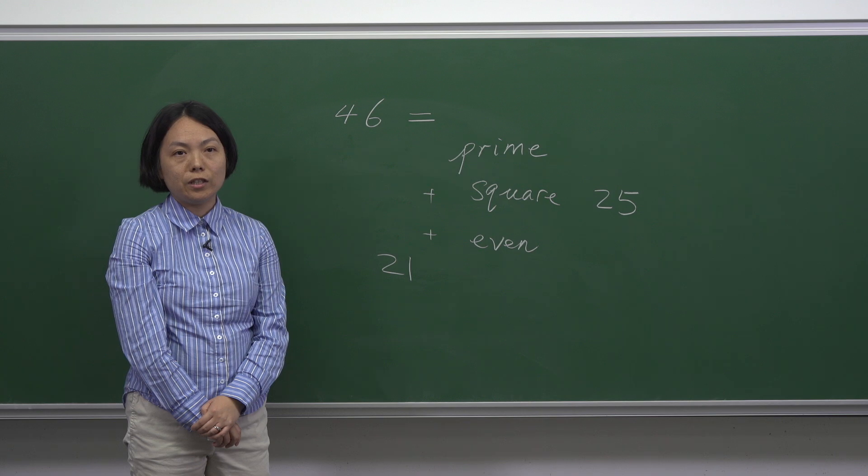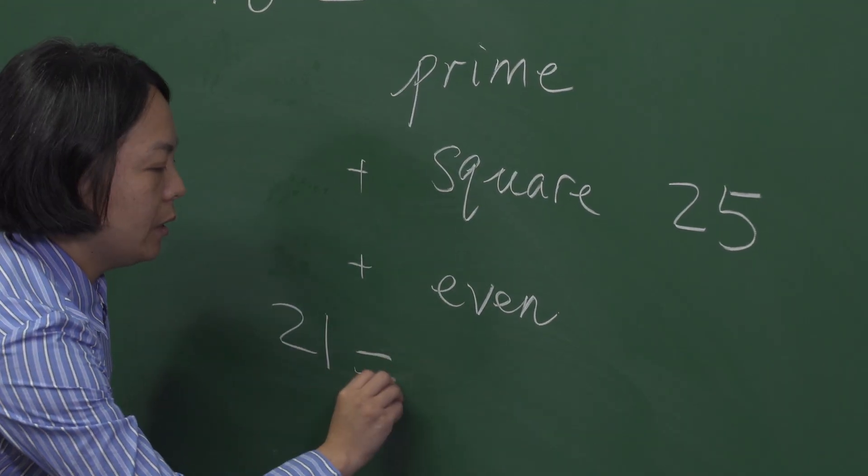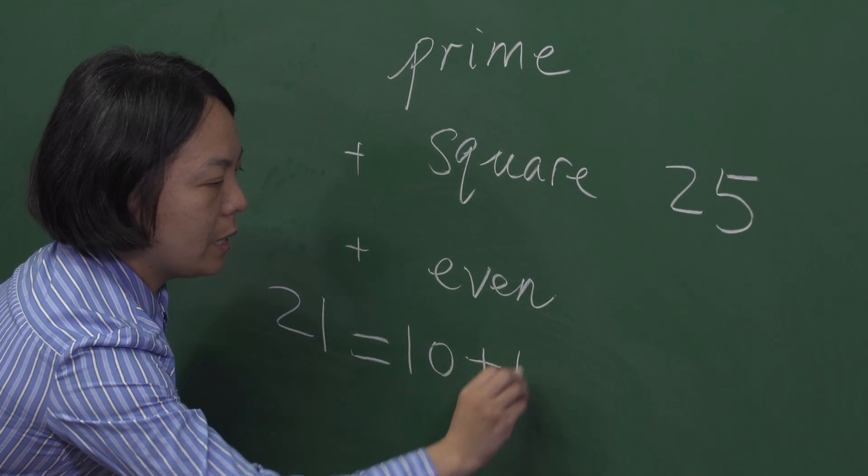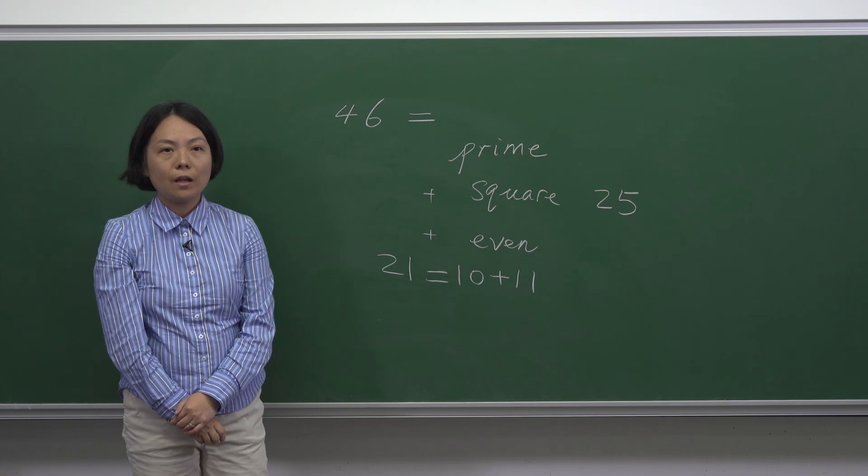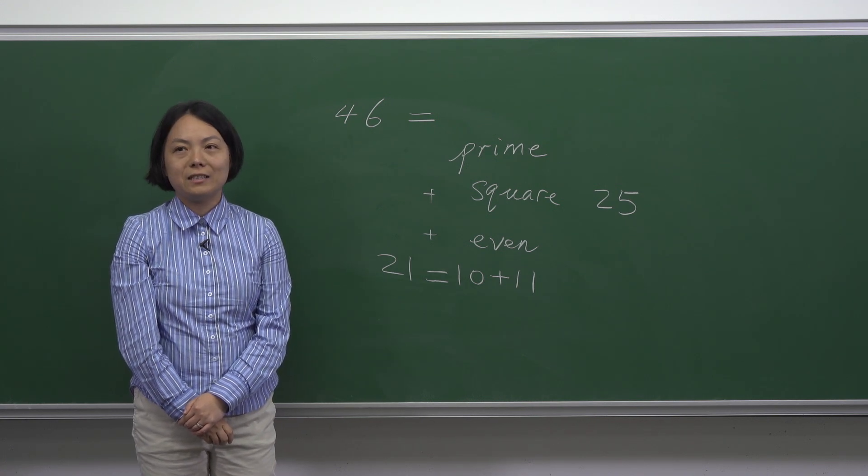Because they have to be both two-digit numbers, the only way is 10 plus 11. Therefore, the even number we are looking for is 10.